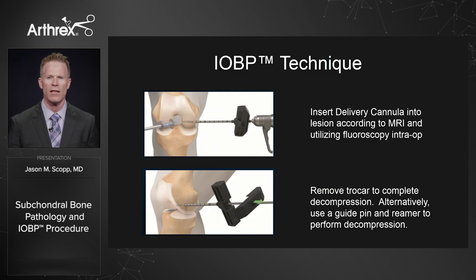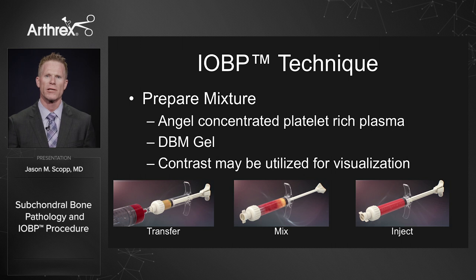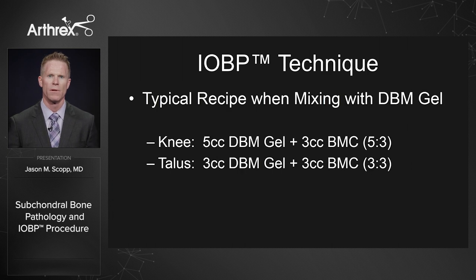The technique is actually the easy part of the surgery — it's the decision, not the incision. We have cannulas that allow us to access the lesion either with a direct approach across the condyle or an indirect approach tangential to the lesion. We prepare our mixture for the IOBP technique: a mixture including DBM gel, with contrast optionally used for visualization. In the knee, we use 5 cc's of DBM gel combined with 3 cc's of bone marrow concentrate; if including 1 cc of contrast, we use 2 cc's of bone marrow concentrate. In the talus, we use 3 cc's of DBM gel combined with 3 cc's of bone marrow concentrate, removing one cc as needed for contrast.